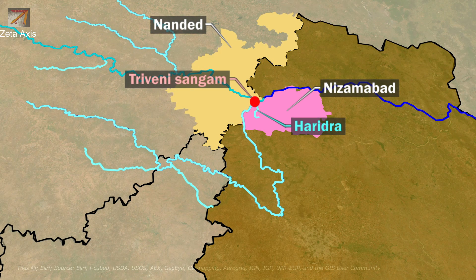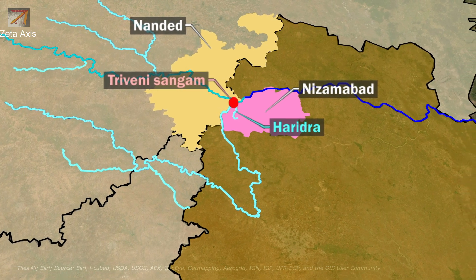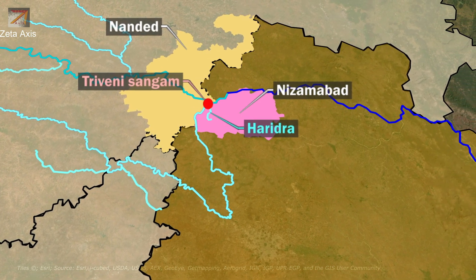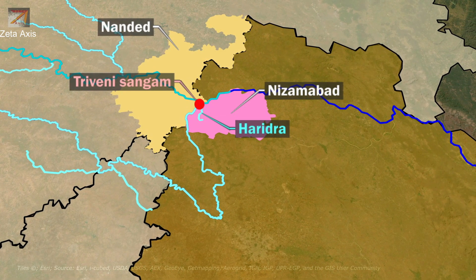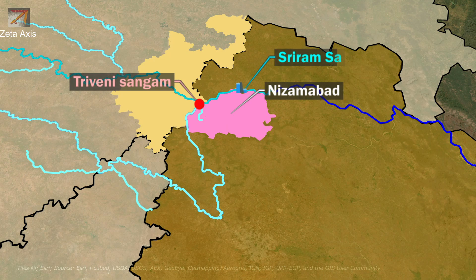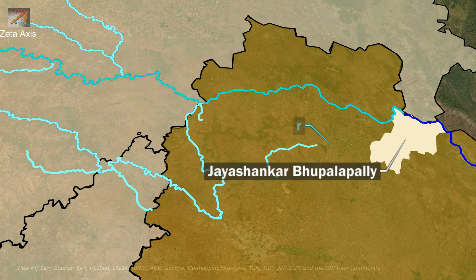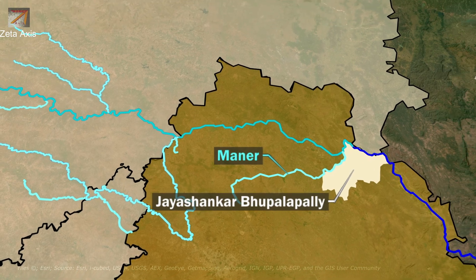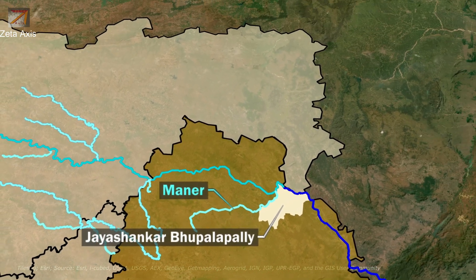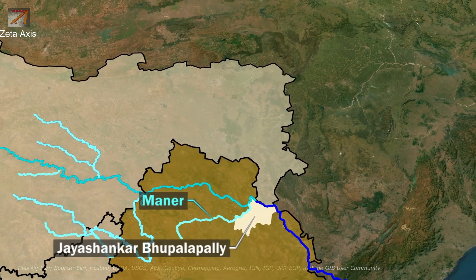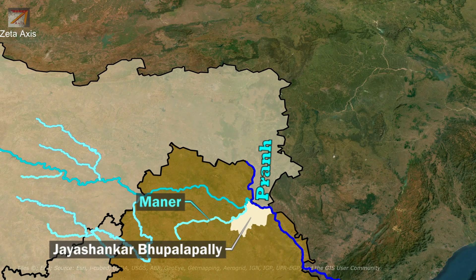The meeting point of these three rivers is called Triveni Sangam. After the confluence of Manjara River with Godavari, the Godavari River enters Telangana in Nizamabad district, where Sri Ram Sagar Dam is built on Godavari River. The Godavari River flows across Telangana to reach Jayashankar Bhupalpalli district where Maner River — a right bank tributary — joins Godavari. Within Jayashankar Bhupalpalli district, Pranahita River also meets Godavari River.